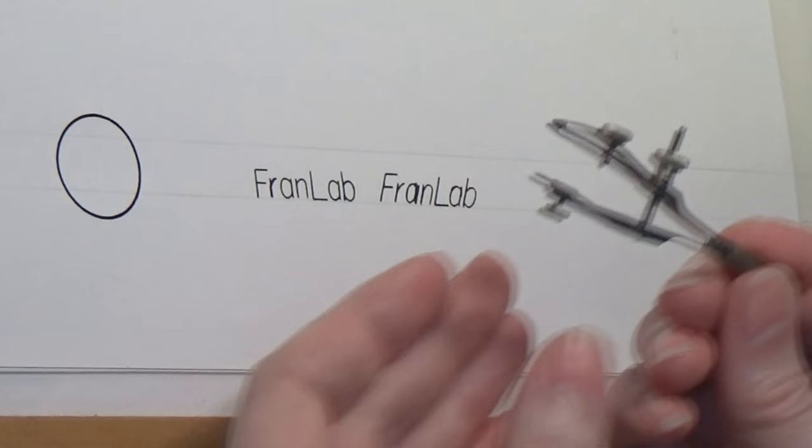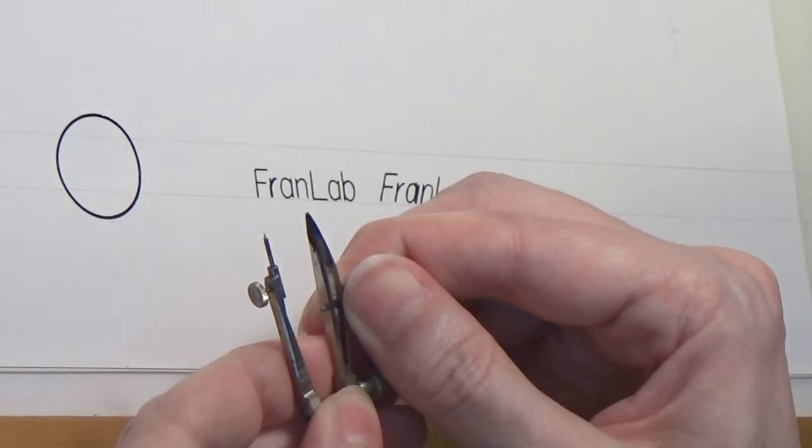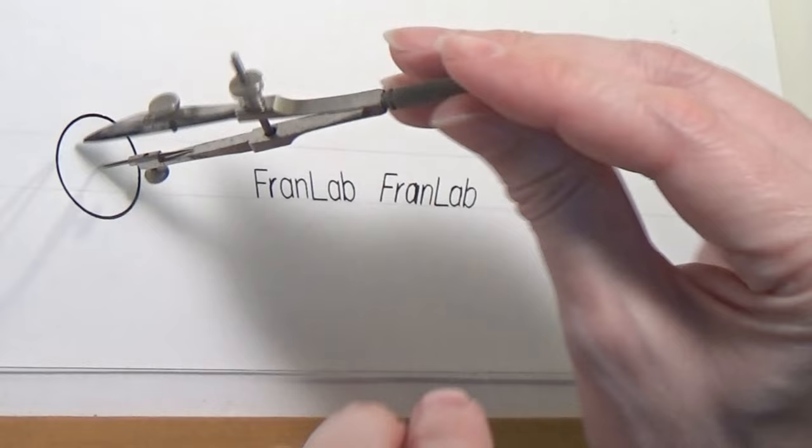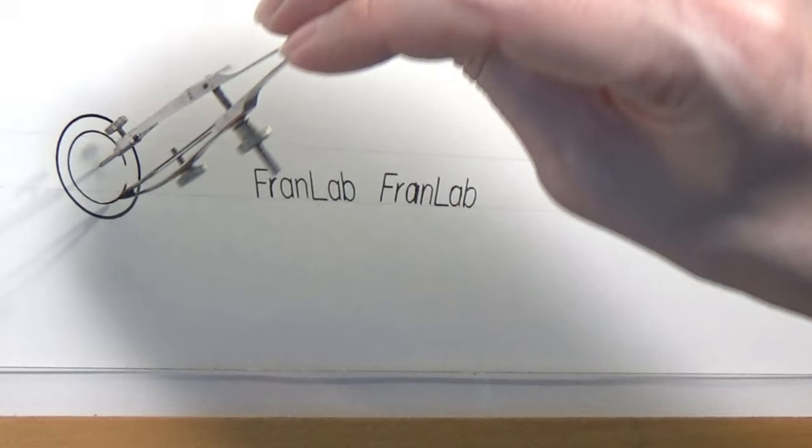And by adjusting the blades, how far they are apart, you can make a slightly different line thickness. These are extremely precise, so you can vary the line thickness to very, very small degrees. You can get a very, very fine line if you want.